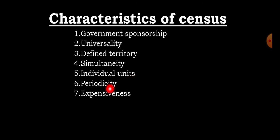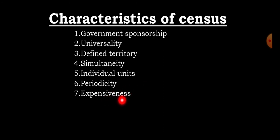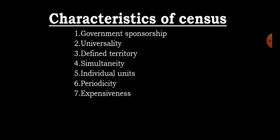The fourth characteristic is continuity — it has a limited time space. Fifth is individuality — it counts individual persons. Sixth is periodicity — it is conducted every five or ten years. Seventh, it is much more expensive. These seven things are the characteristics of population census.